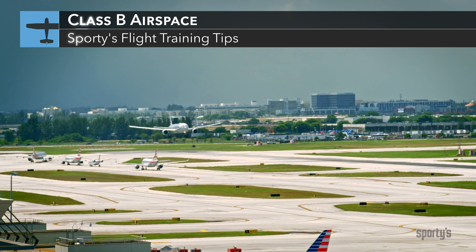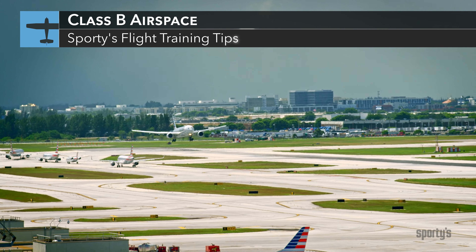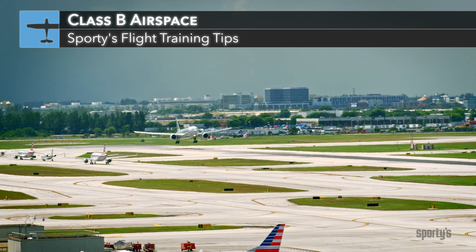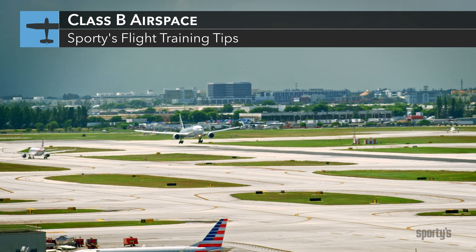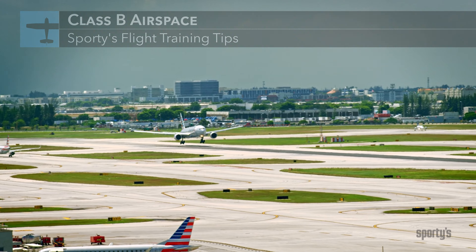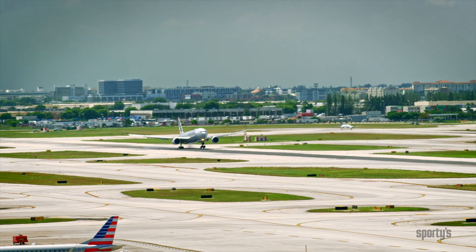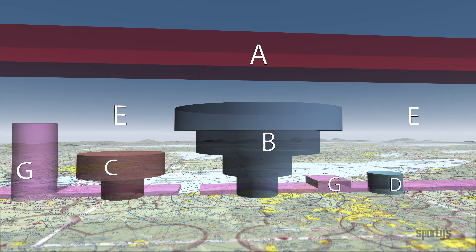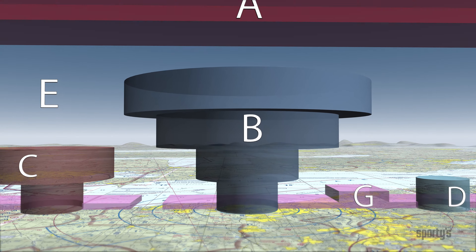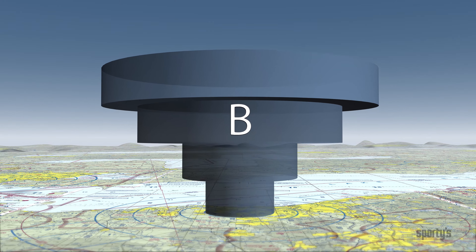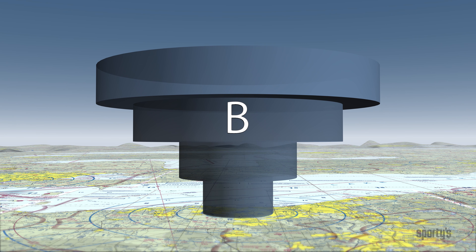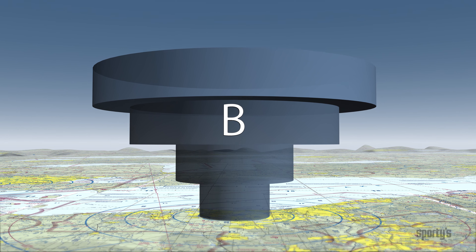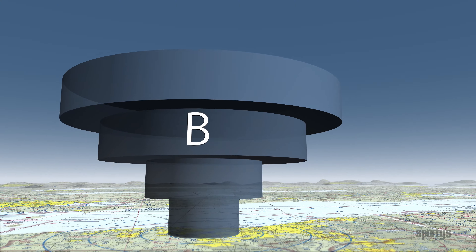Also watched closely is Class B airspace. Located around airports where there's a large volume of air traffic, Class B airspace, often compared to an upside-down wedding cake in shape, begins at the surface and extends upward to a designated altitude, typically 10,000 feet.